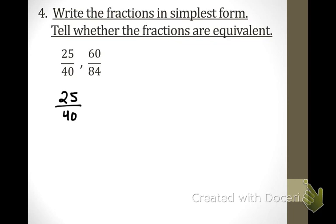This one asks us to write the fractions in simplest form and tell whether they are equivalent. All you're going to do is rewrite the original fractions and divide them to get them as simple as possible — reduce them as low as they go. What can go into 25 that can also go into 40? The number 5. Whatever you divide by on top, you must divide by on bottom. What do you get? 5 over 8. Correct.